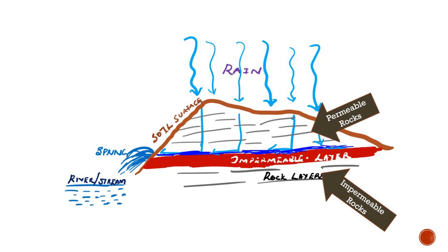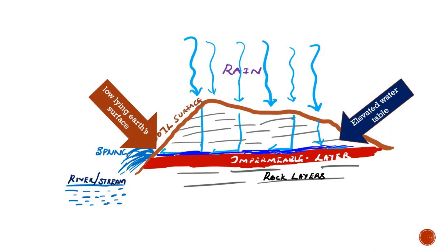In the permeable rock layers, water seeps through until it reaches a layer of clay. Once it reaches that clay, it cannot go further. Then the water from the elevated water table flows to the low-lying earth surface following the law of gravity, and this water forces out until it comes through the land surface — and at that point you see a spring. Springs can be used as a source of water for domestic use, electricity generation, fish hatcheries, irrigation, and swimming.